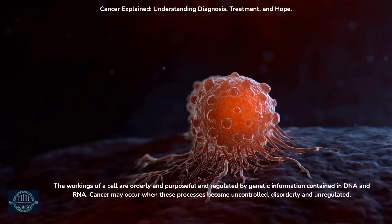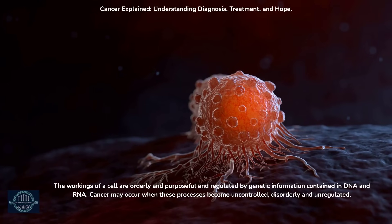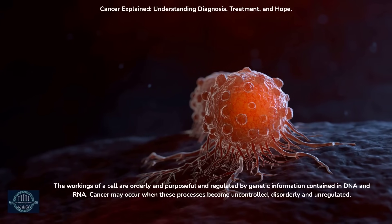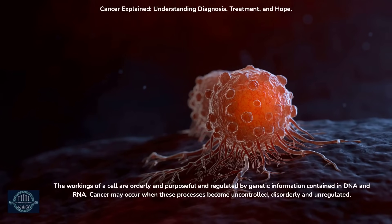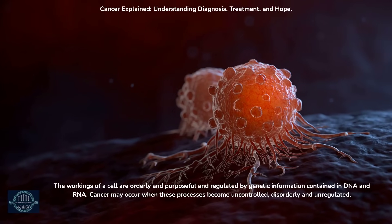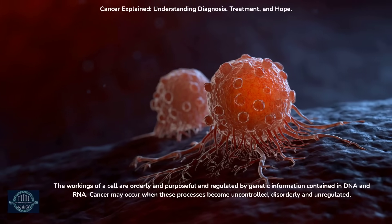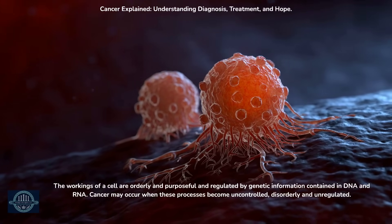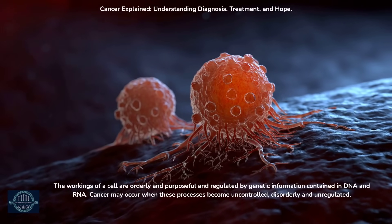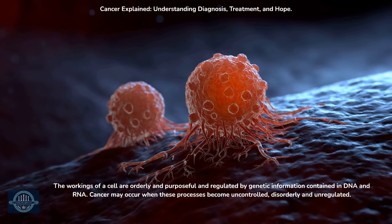The workings of a cell are orderly and purposeful and regulated by genetic information contained in DNA and RNA. Cancer may occur when these processes become uncontrolled, disorderly and unregulated. Cancer starts in a cell or group of cells, which are the smallest basic structure in the body responsible for the functioning of the body or organism. Inside a cell are all the many essential elements such as proteins, DNA, RNA and other small molecules responsible for generating energy, detoxifying harmful substances, etc.